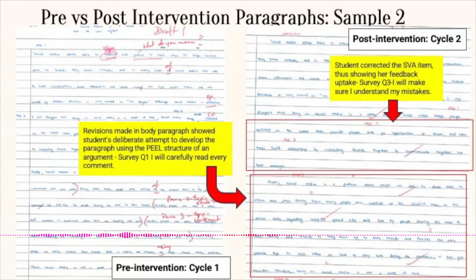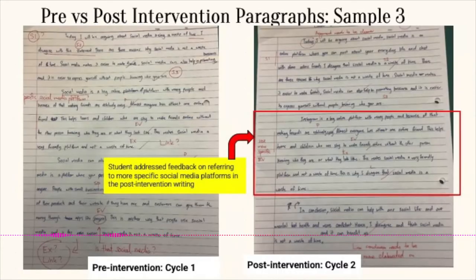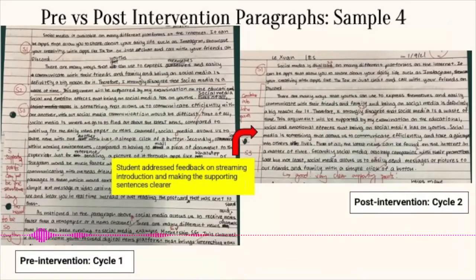Another example shows the teacher guiding the student to clarify that her appeal is not very clear — which was one of the issues we wanted to address in this unit. Later on, the student tries to improve the piece, highlighted in the red box. In another sample, because content was one of the issues, the teacher highlights that the student could be clearer about the topic, and the student refines the paragraph accordingly, also highlighted in red.